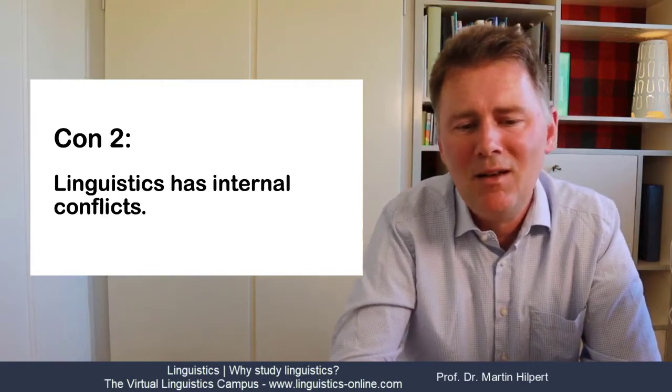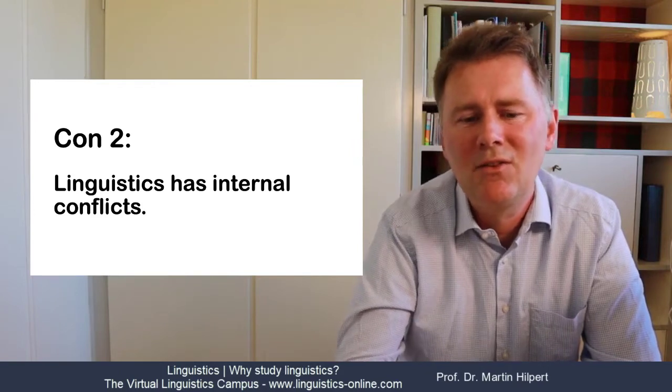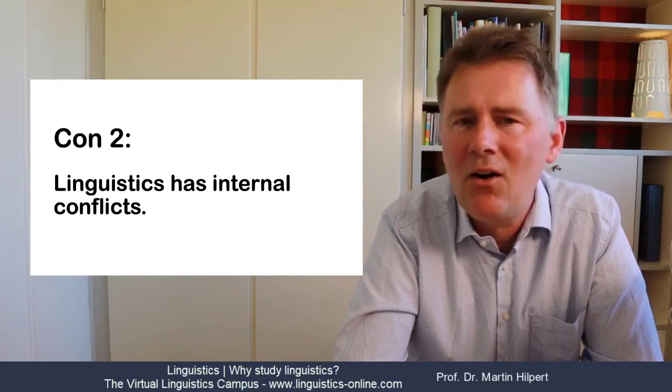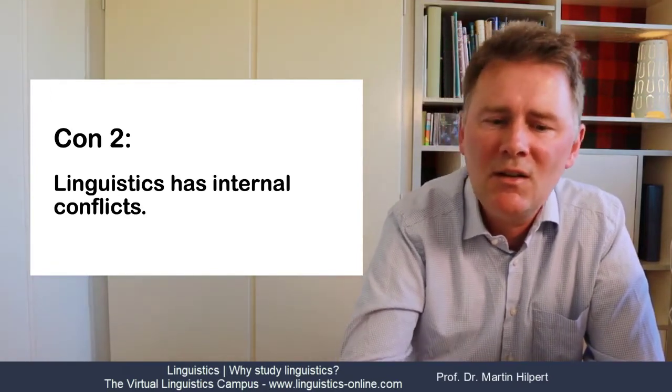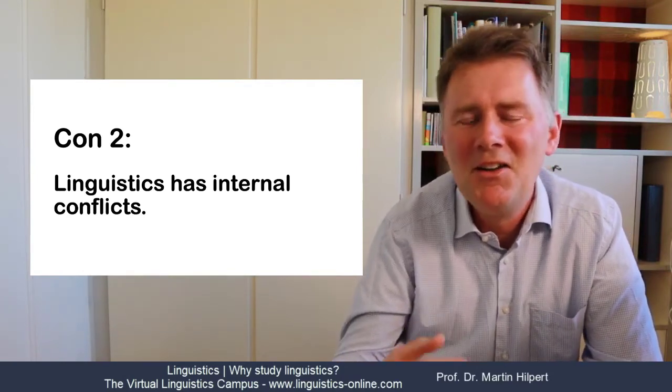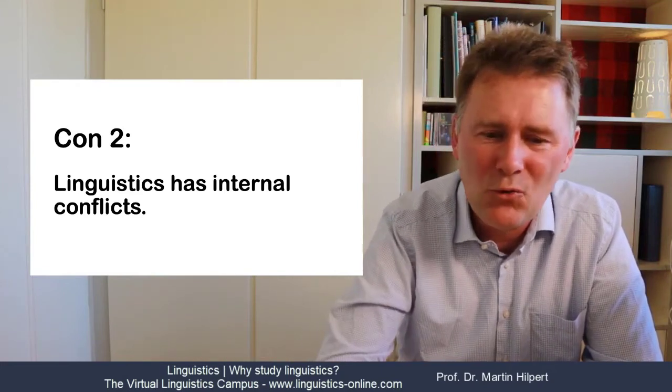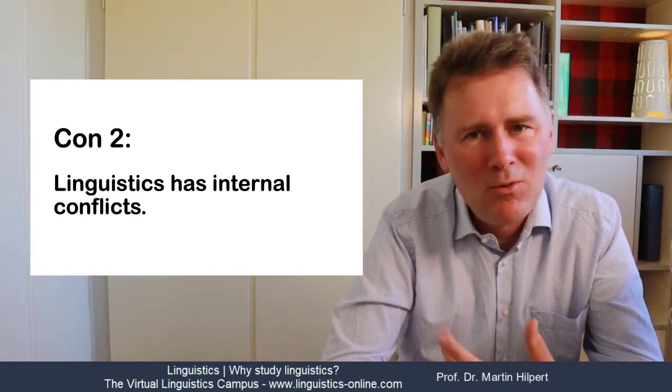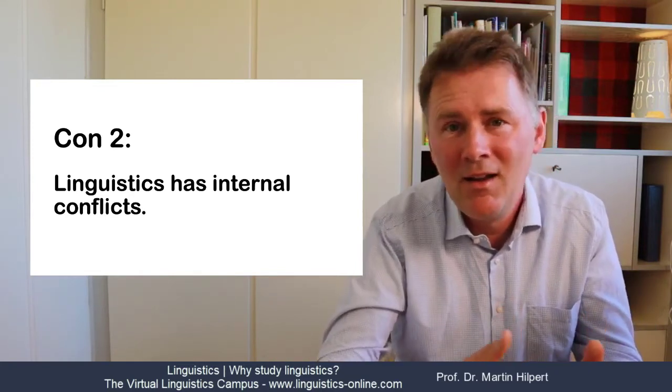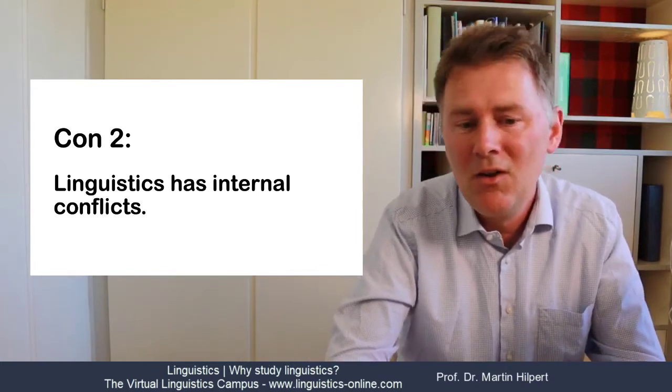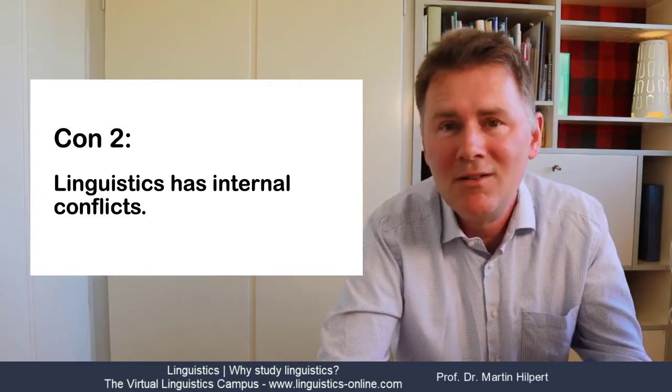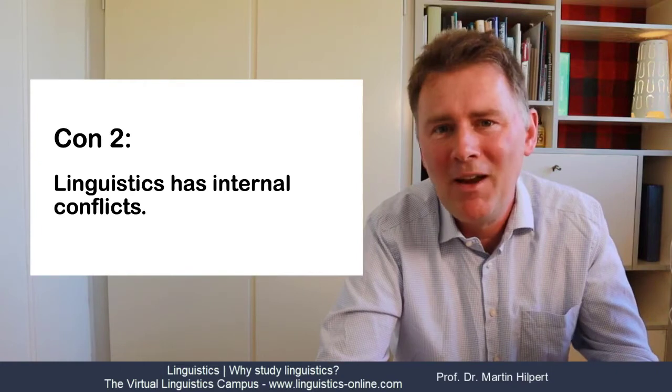Reason number two. Linguistics has internal conflicts. One thing that you're going to find out when you study linguistics is that there are very different ways of doing it. So much so that there are conflicts between different schools of linguistics that are trying to discredit whatever it is that the other group is doing. For example, there is a major divide in linguistics between what is called formal linguistics on the one hand and functional linguistics on the other. What could happen is that you end up with a professor of linguistics who's convinced that there's only one correct way of doing things.